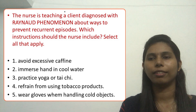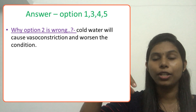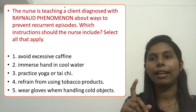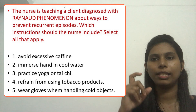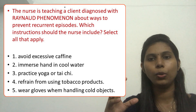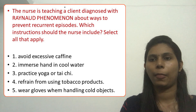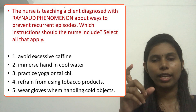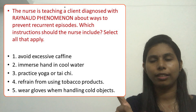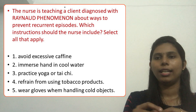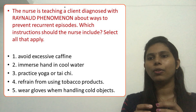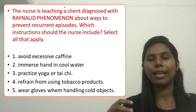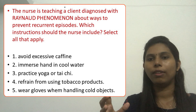Option two says: immerse hand in cold water — that is wrong. We studied that the client should immerse the hand in warm water to recover from the acute vasospasm. Option three: practice yoga or tai chi — that is correct because the client should practice relaxation techniques to manage emotional stress. Option four: refrain from using tobacco products — that is also correct because smoking and nicotine are precipitating factors. Option five: wear gloves when handling cold objects — that is also correct.